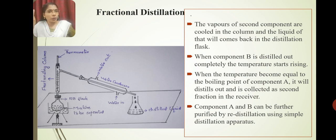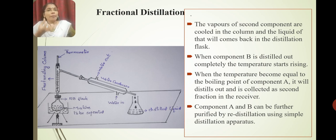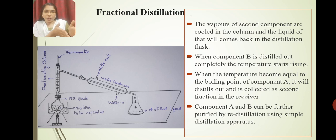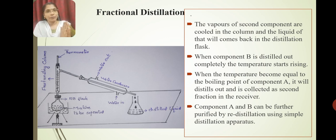When we raise the temperature and it becomes equal to the boiling point of component A, component A starts to evaporate. It distills out and, using a receiver or conical flask, we can collect and separate that component. We now have two components separated.